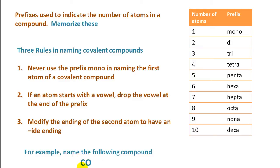Let's take a look at CO. Most of you are familiar with this — we name it carbon monoxide. The first atom, carbon, never gets the prefix mono per rule one. For the second atom, we have one oxygen, so the prefix is mono. Since oxygen begins with a vowel, we drop the o from mono. Then we modify the ending of oxygen to -ide, giving us oxide. So putting this all together: carbon monoxide.